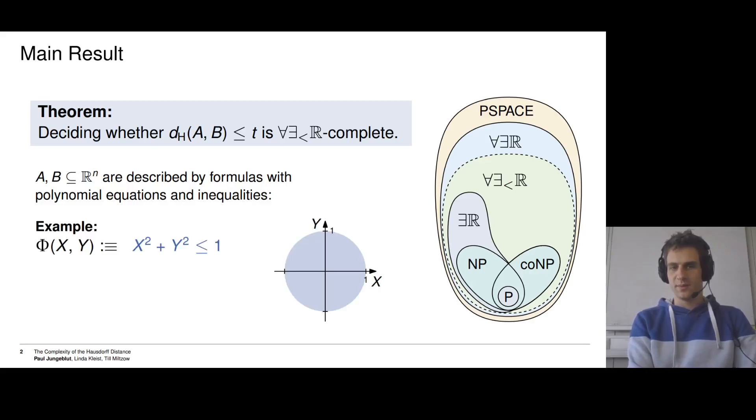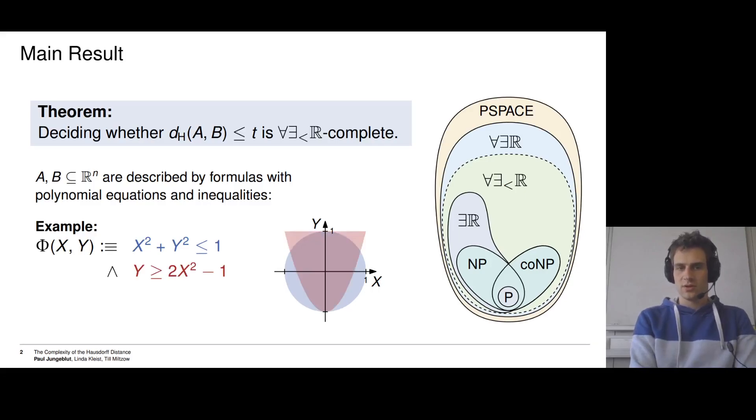So what does that mean? Let's look at an example. For example, we have this formula Φ that depends on two variables x and y. It is defined via x² + y² ≤ 1, and we see that this defines this blue unit circle. We can add another condition, for example, y ≥ 2x² - 1, which is this red parabola. They are connected via a logical AND operation, so what we look at is the intersection.